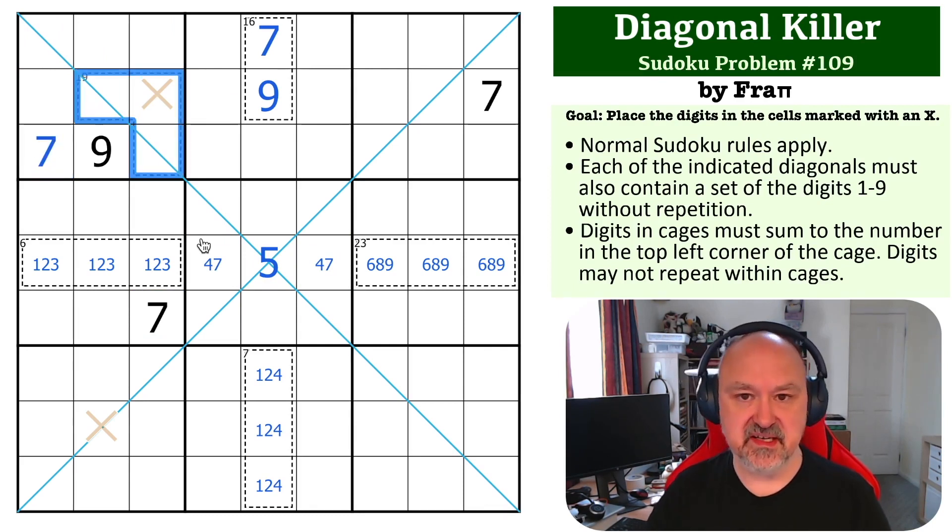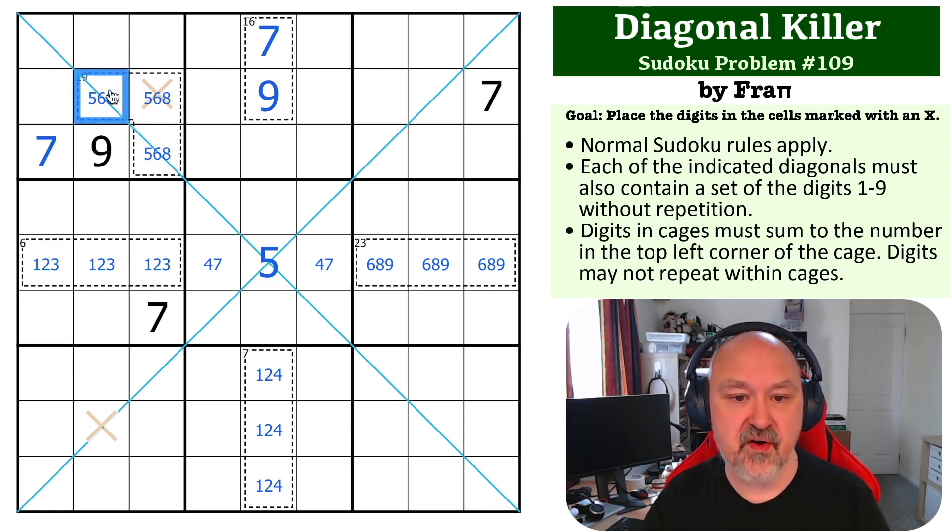Now, we need to put 19 into these three cells, but the maximum digits we've got available now are 5, 6, and 8 because we can't use 7 and 9, and if you add 5, 6, and 8, you get 19. So, these must be 5, 6, and 8, but because of this 5, we can't put 5 on this diagonal, so this becomes a 5.